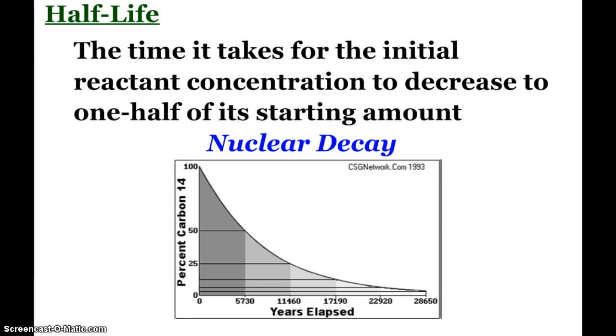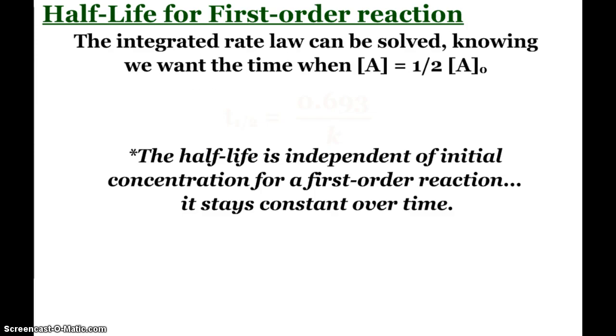But since we know that we want to know when the concentrations will be exactly one-half, we can solve the integrated rate law. For a first-order reaction, the half-life is always going to be 0.693 divided by the rate law constant. And all of our nuclear decay reactions are pretty much first-order decay, first-order reaction, so we can always find the half-life this way. And you'll notice that the half-life is independent of initial concentration for a first-order reaction, so it stays constant over time. That half-life is always going to be a predictable amount of time.